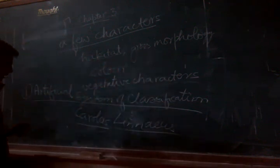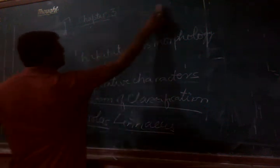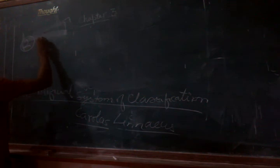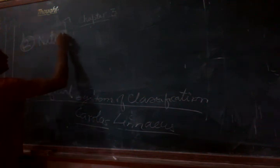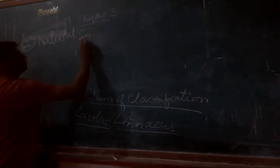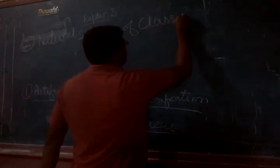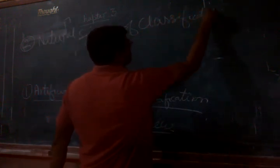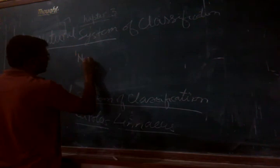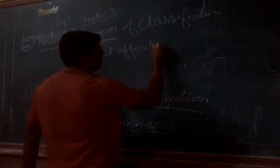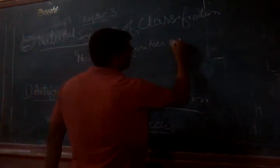So what happened is that the second system of classification was proposed. After the artificial system of classification, the next is the natural system of classification. So what happened in the natural system of classification? Under the natural system, natural affinities of the organisms were considered — how closely they are related, based on so many other characters.